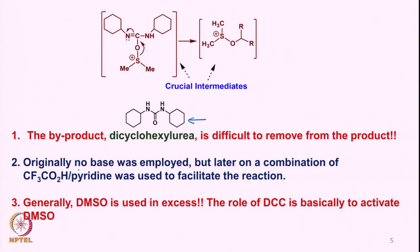Many people preferred not to use dicyclohexylcarbodiimide because of the difficulty in separating dicyclohexyl urea. Originally there was no base used, so the reaction took a bit longer. But later, trifluoroacetic acid and pyridine were used in combination, where trifluoroacetic acid protonates the dicyclohexylcarbodiimide and pyridine acts as a base, facilitating the reaction.